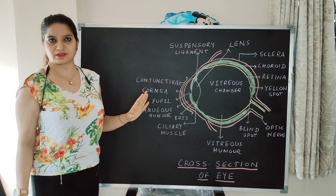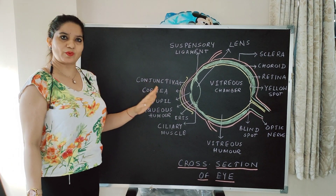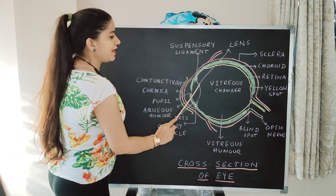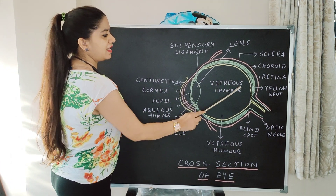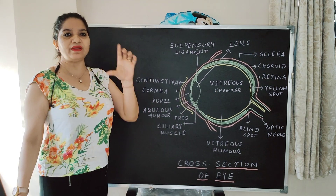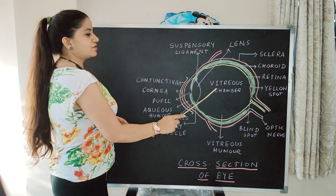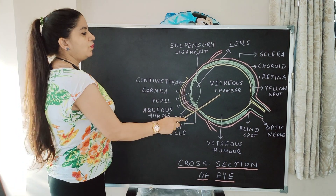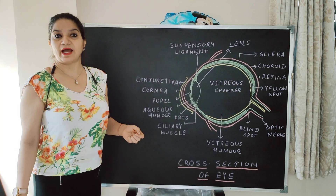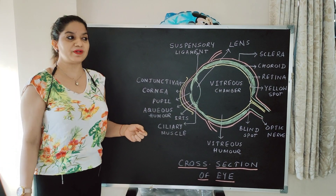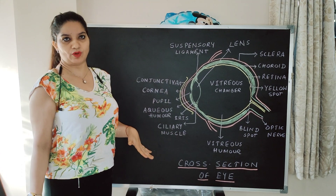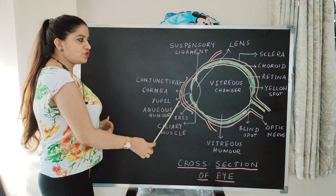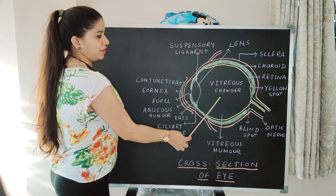Aqueous humor is very important. The vitreous chamber is present between the lens and the retina. It has another jelly-like substance known as vitreous humor. Vitreous humor maintains the shape of the eyeball. So these are the two chambers: the aqueous chamber and the vitreous chamber.